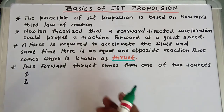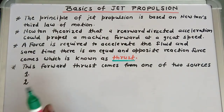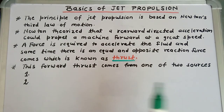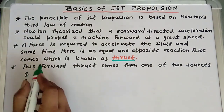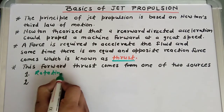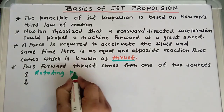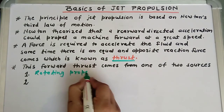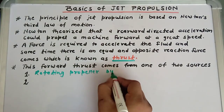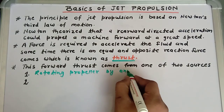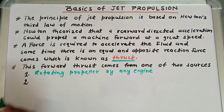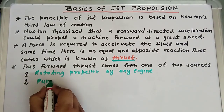Thrust is very important to move any object in the forward direction, and this forward thrust comes from one of two sources. The first source is the rotating propeller driven by any engine, and the second one is a pure jet engine which can produce thrust.